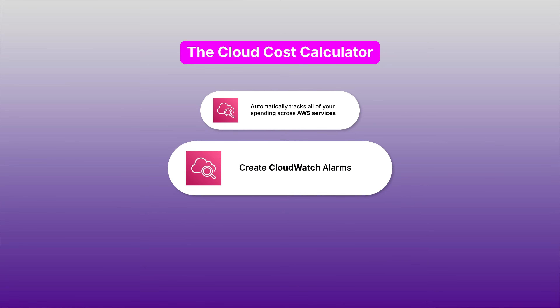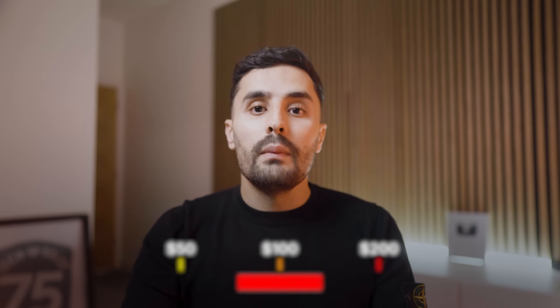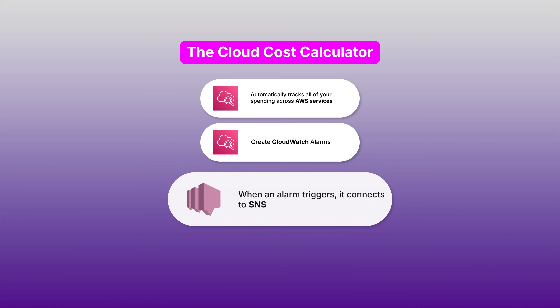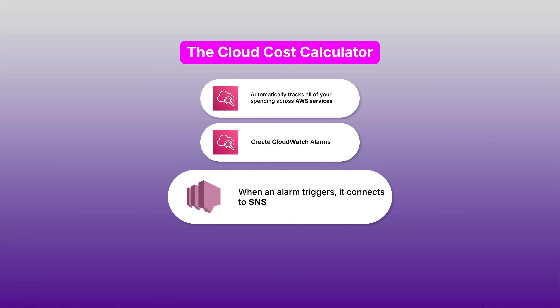Next, we create CloudWatch alarms. You set spending thresholds — maybe $50, $100, or even $200 — and if your monthly bill hits any of these amounts, the alarm immediately fires off a warning. When an alarm triggers, it connects to SNS, which stands for Simple Notification Service. When your AWS bill hits $100, SNS can instantly send emails, text messages, or even phone calls to whoever needs to know.